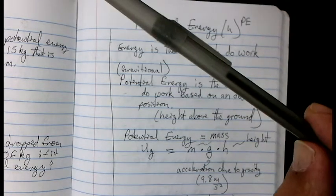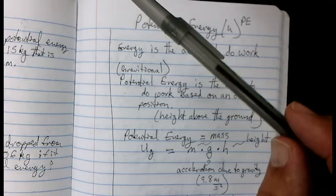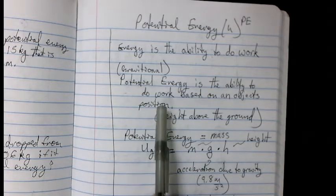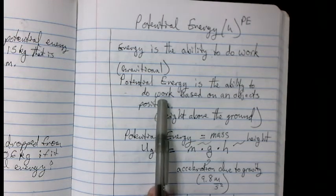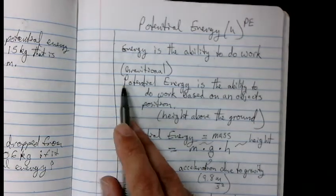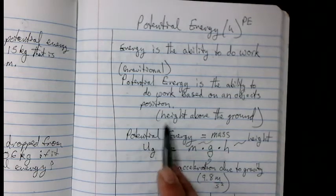The force of gravity, known as weight, is pulling it down. So just by holding something above the ground, it has the potential to have a force applied over a distance. So potential energy is the ability to do work based on an object's position or height above the ground.